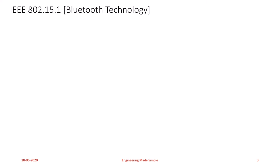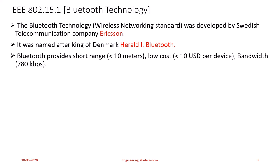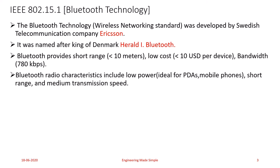Now we move on to our main technology for the day: IEEE 802.15.1, which is Bluetooth technology. Bluetooth was developed by Swedish telecommunication company Ericsson and was named after King Harald I Bluetooth of Denmark. Bluetooth provides short-range communication with a coverage radius of less than 10 meters, low-cost devices (less than 10 USD per device), and a bandwidth of about 780 kbps. Bluetooth radio characteristics include low power, making it ideal for PDAs and mobile phones, with medium transmission speed up to 780 kbps.